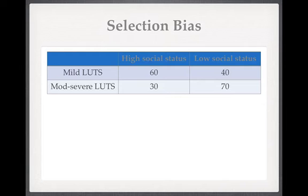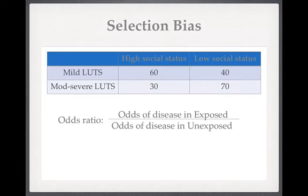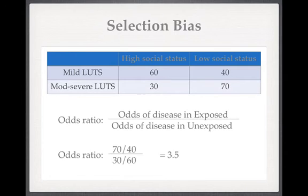In this situation, where we have a case-control study, what we can work out is what's called an odds ratio. The odds ratio is the odds of the disease in the exposed group divided by the odds of the disease in the unexposed group. If we pick somebody with low social status, the odds of them having moderate or severe lower urinary tract symptoms is 70 over 40. If we pick somebody with high social status, the odds are 30 over 60. When we work that out, we get an odds ratio of 3.5.